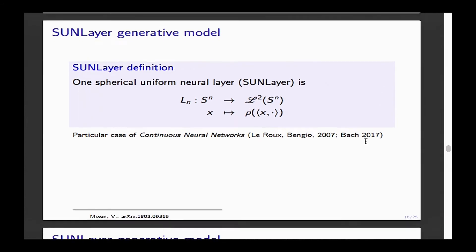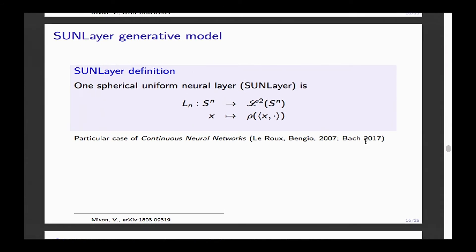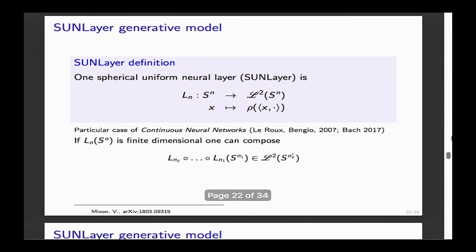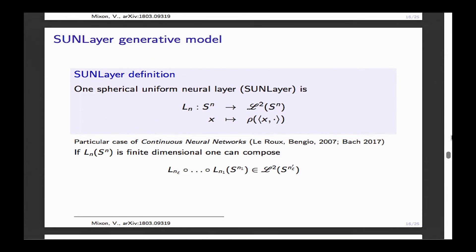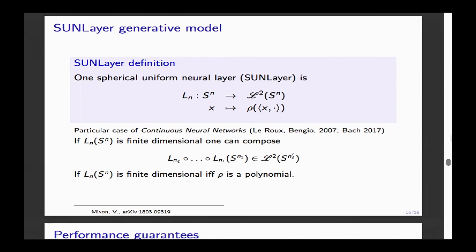You can compose these layers with some tricks: if the image is finite dimensional, you project to the right subspace of L2 and then compose. If you want to compose the layers as-is, you need the image to be finite dimensional, which happens when the activation function is a polynomial.